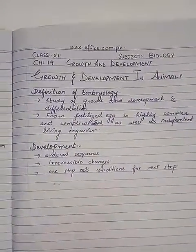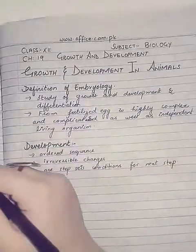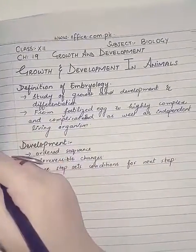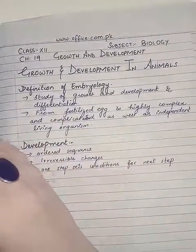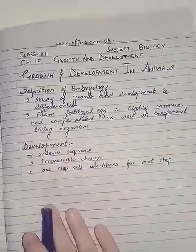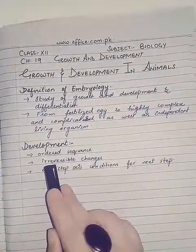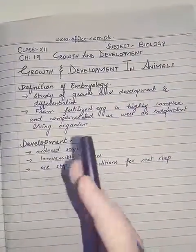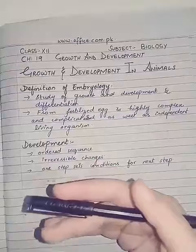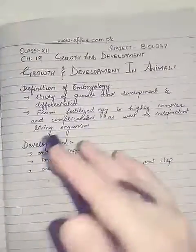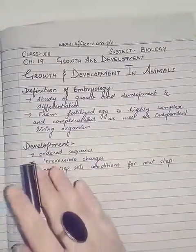Next, the definition of development — we have already discussed what development is. It is an ordered sequence of changes which are irreversible, meaning the organism has undergone changes that cannot be reversed. An organism cannot reverse back